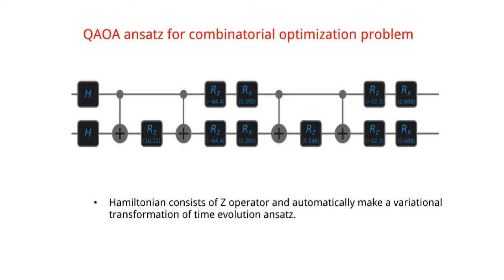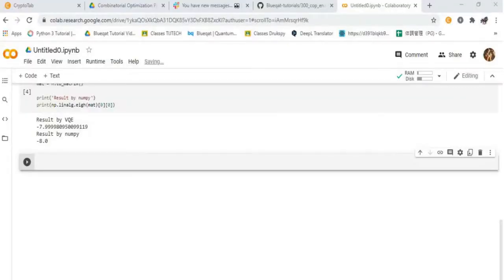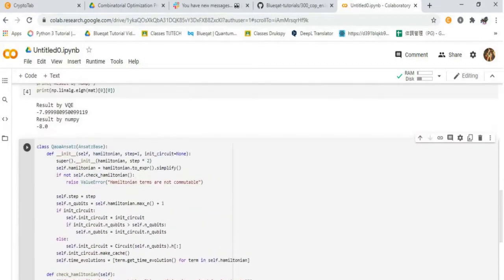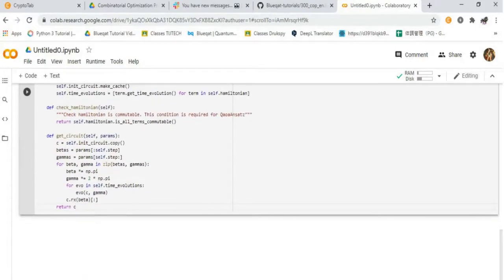Hamiltonian consists of Z operator and automatically makes a variational transformation of time evolution ansets. Type the codes for QAOA ansets for combinatorial optimization problem. BlueCat does most of the process and what you just need to do is to formulate the Hamiltonian as a combinatorial optimization with binary number of 0 and 1. It is very easy, now we can think about the social problem as binary number. Qubit at 0 and Qubit at 1 has minus 3 of bias, and Qubit at 0 times Qubit at 1 has minus 2 as a weight to give the result minus 8.